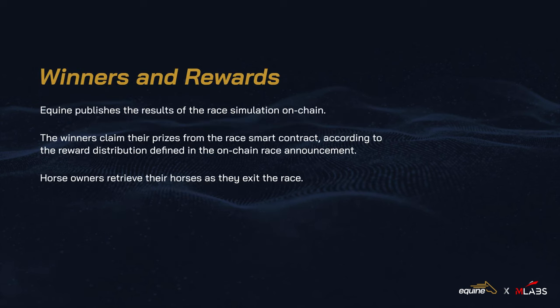When the race is over, equine publishes the results of the race simulation on-chain. This allows the winners of the race to claim their corresponding rewards from the prize pool. Reward distribution is controlled by the racing smart contracts, without any further interaction needed from equine.